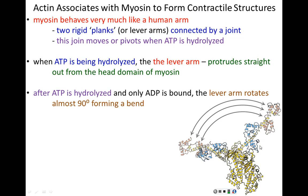Here's the head domain in yellow, and this lever arm — this tail — is protruding generally straight out of that head group. But when ATP is hydrolyzed and converted into ADP, the lever arm rotates almost 90 degrees and bends. Now the head domain and the lever arm are in a different configuration — not straight, but bent. That's the movement that myosin is responsible for.